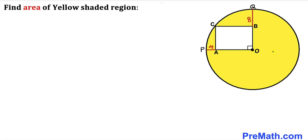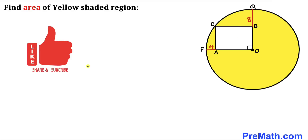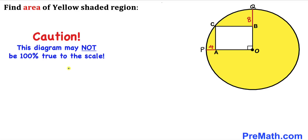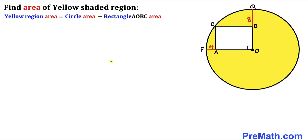Welcome to pre-math. In this video we have a circle with center O such that the horizontal distance PA is 4 units and the vertical distance QB is 8 units. The white rectangle AOBC is inscribed in the quarter of this circle, and we are going to calculate the area of the yellow shaded region. Note that this figure may not be 100% true to scale.